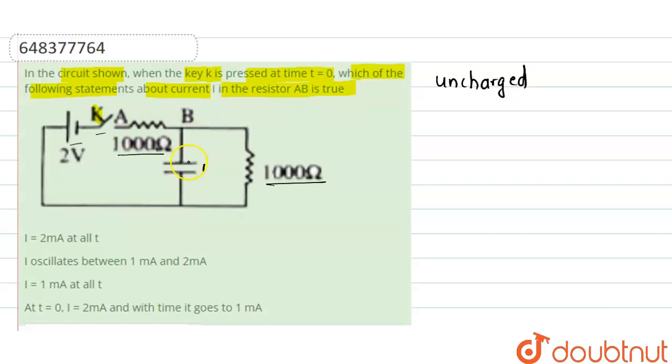That's why all the current which is passing through the circuit is absorbed by this capacitor and no current will flow through this resistor. So we can say that equivalent resistance of the circuit at that time is only this 1000 ohm. So initially equivalent resistance is 1000 ohm at time t equals 0.